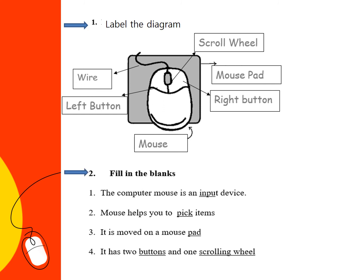Fill in the blanks: the computer mouse is an input device. Mouse helps you to pick items. It is moved on a mouse pad. It has two buttons and one scrolling wheel.